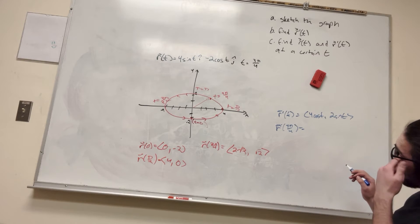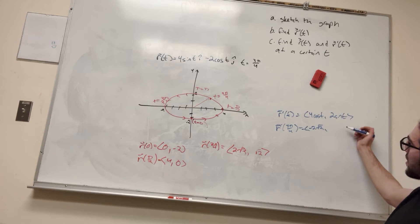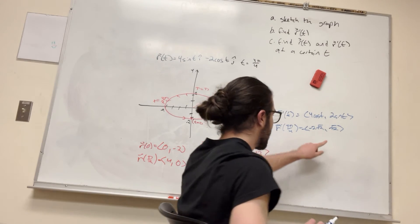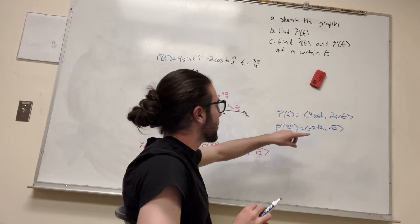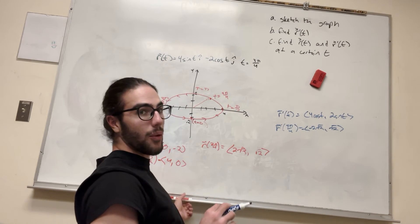So cosine of 3π over 4, we find it to be negative radical 2. So it's going to be negative 2 radical 2. And then sine, it's going to be radical 2. Okay, so what this tells us is that at this point, it's moving negative 2 radical 2 in the x direction, positive radical 2 in the y direction.